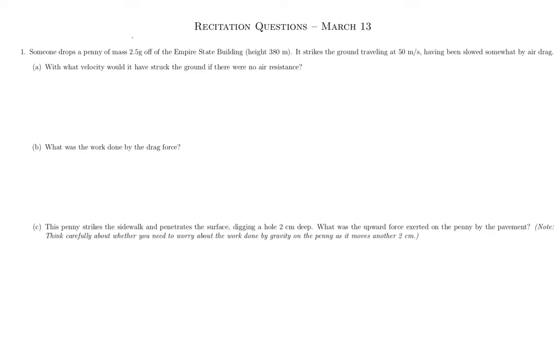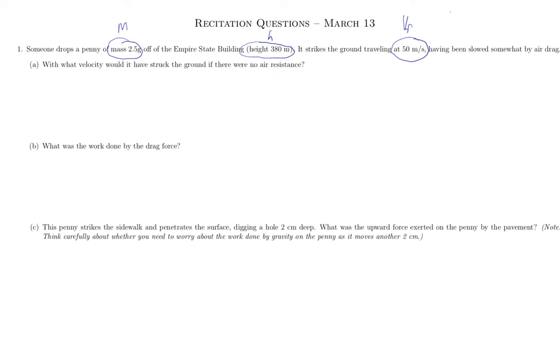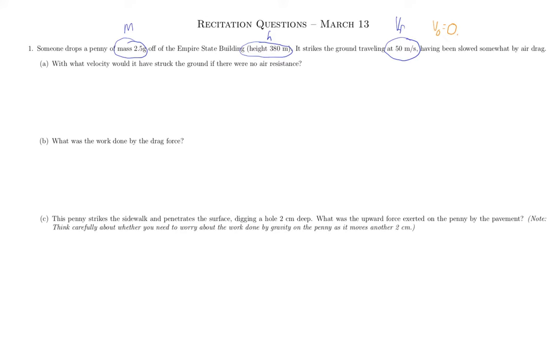So just to make clear our notation, we know the mass of the penny, which I'll label as M. We know the height of the building, which I'll label as H. And we know the final velocity with which it hits the ground. We also know that it was dropped from rest. So we know that its initial velocity is zero.